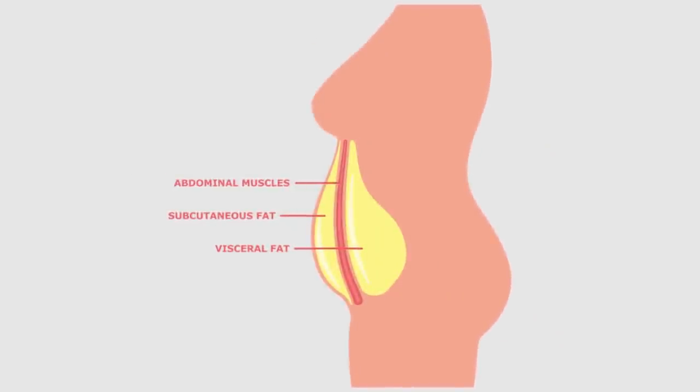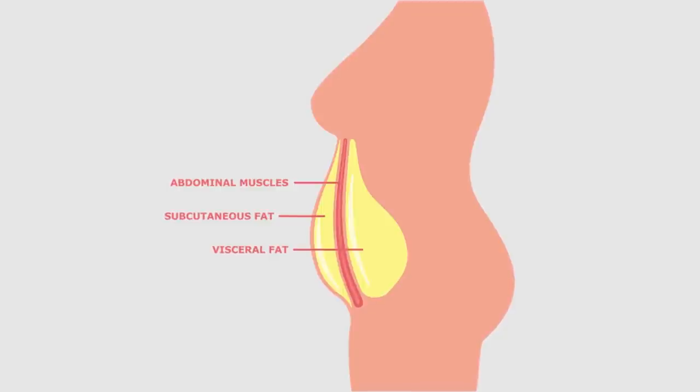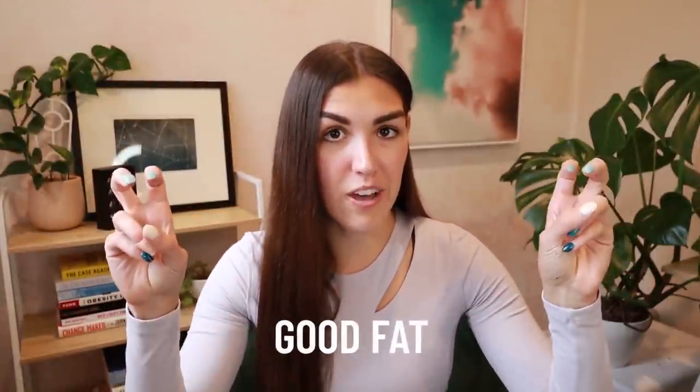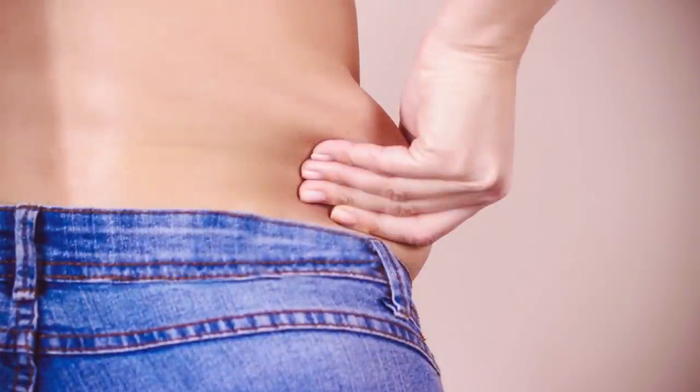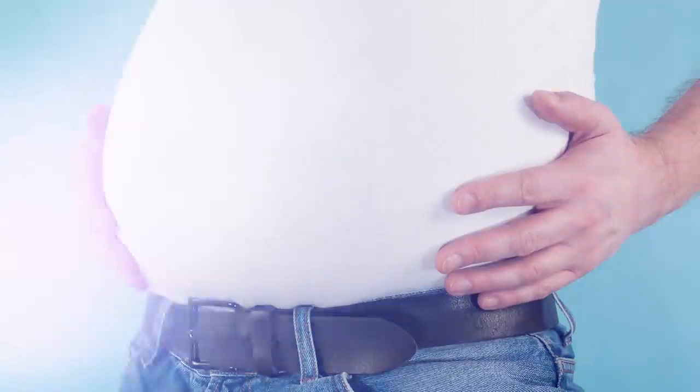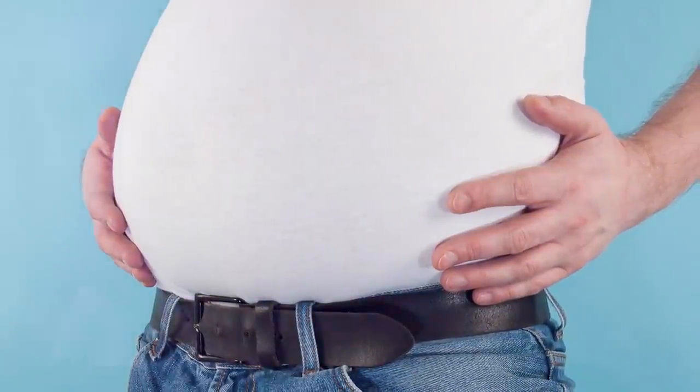Visceral versus subcutaneous fat — visceral fat is a type of fat stored in our abdominal cavity surrounding our organs. The other type of fat is subcutaneous fat, which is stored just beneath our skin in various areas around our body. Subcutaneous fat is considered to be good fat because it is less harmful than visceral fat — it's your body's stored energy supply, so having some is totally normal and healthy. Any fat you can pinch on your body is subcutaneous fat. Visceral fat is hard, and large amounts will result in a protruding belly, but you can still have visceral fat even if you cannot see it.